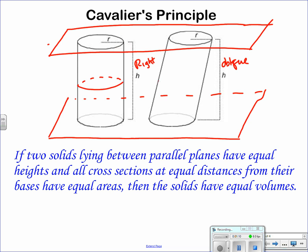and slice the oblique cylinder. So if I were to slice those, and those slices were equidistant from the bottom plane or from our bases, and this area is equal to that area, then our solids are going to have equal volumes.